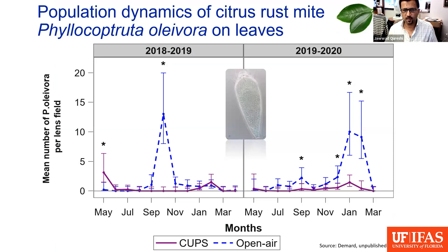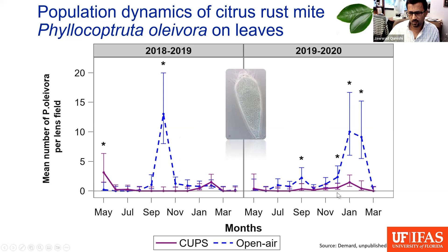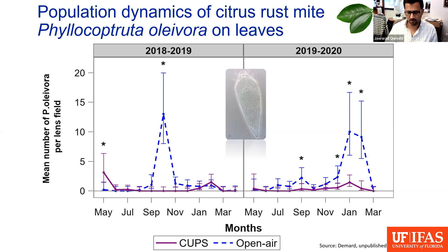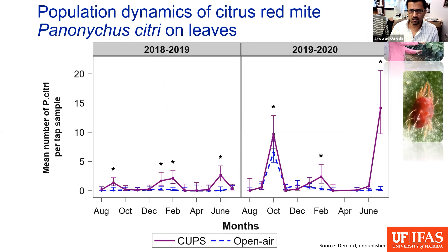In terms of pest mites, Emily DeMar — my PhD student who graduated last year — collected this data. For rust mite populations on leaves, the purple bar represents the CUPS and the dashed blue represents open air. Mite populations were much less in the CUPS compared to the outdoor system. But it's important to note that even for fresh fruit, these populations can cause significant damage — they not only target the leaves but also the fruit, and the symptoms on fruit are not acceptable for fresh fruit markets.